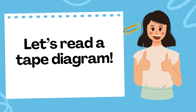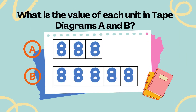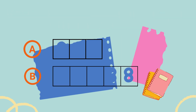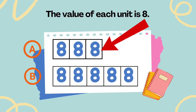Let's read a tape diagram. What is the value of each unit in tape diagrams A and B? The value of each unit is 8.